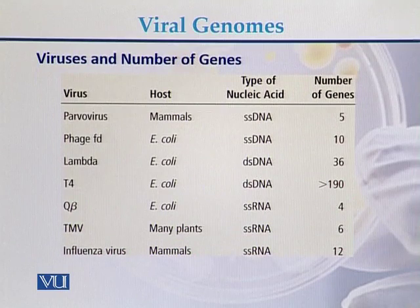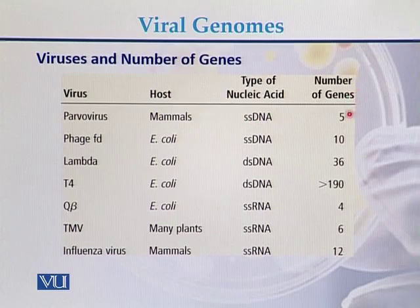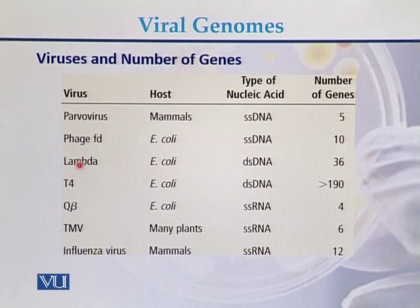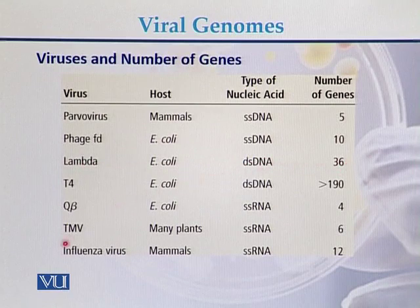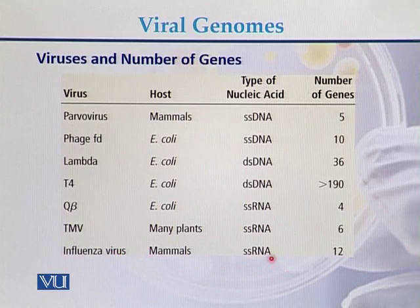Here is a comparison between viruses, their genome types, and number of genes. Parvovirus, whose host is mammals, has a single-stranded DNA genome with 5 genes. Lambda virus is a double-stranded DNA virus with 36 genes. Tobacco mosaic virus has a single-stranded RNA genome with 6 genes. Influenza virus has a single-stranded RNA genome with 12 genes.